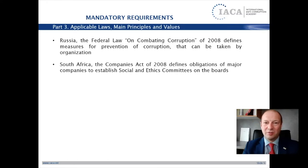For example, the Federal Law of the Russian Federation on Combating Corruption, adopted in 2008, established a general legal obligation for all companies acting in Russia to implement particular measures to prevent corruption and defined a set of possible measures. The General Prosecutor's Office of the Russian Federation carries out supervision over compliance with this law. The Central Bank of the Russian Federation adopted several legal acts establishing a legal obligation for particular types of financial businesses to implement anti-corruption compliance. Also, the South African Companies Act defined obligations of major companies to establish social and ethics committees on the boards, which have particular functions related to preventing corruption.